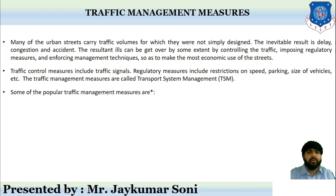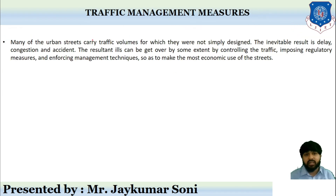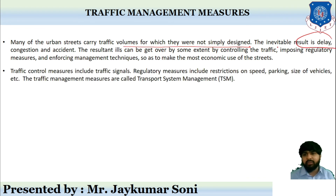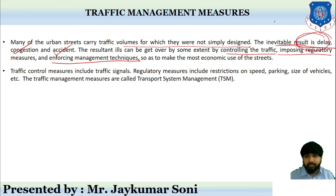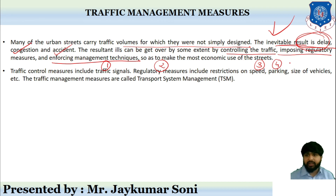Now let us discuss traffic management measures. Many urban cities and streets carry traffic volumes for which they were not simply designed, resulting in heterogeneous and haphazard movement. Due to this, inevitable delays, inevitable congestion, and inevitable accidents are observed. These can be reduced to some extent by controlling traffic, imposing certain regulatory and enforcement measures. Traffic management measures include traffic signal management, speed restriction, parking restrictions, and vehicle size restrictions.